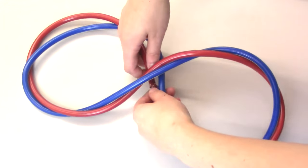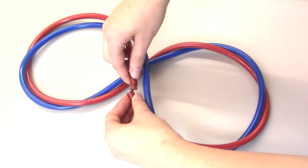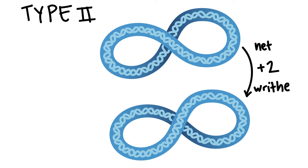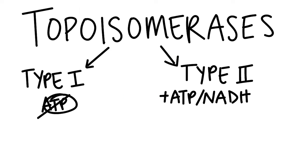Type 2 topoisomerase breaks both of the two DNA strands and passes the entire double helix through the gap. This increases or decreases the linking number by two. Here, the top DNA double helix represents the structure before the topoisomerase acts, and the bottom DNA double helix is after the enzyme completes the reaction. In this case, the result is that the writhe of the molecule increases by two. To make this idea clearer, this diagram shows what this change would look like if you added one positive writhe at a time instead of using type 2 topoisomerase. Type 2 topoisomerase reactions require some form of energy, such as ATP or NADH.